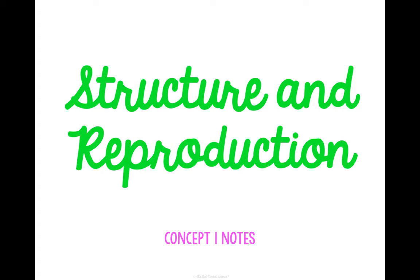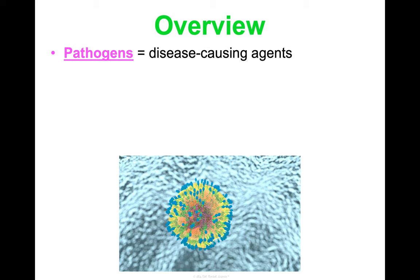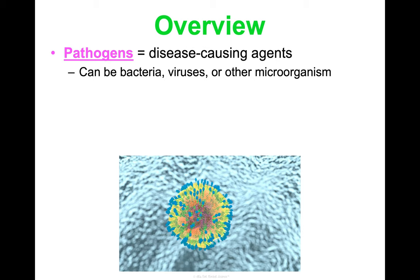This is Concept One Notes in our Pathogens Unit, and we're going to be talking about the structure and reproduction of both bacteria and viruses. Before we jump in, this unit is titled Pathogens. So what are pathogens? They are disease-causing agents. This can be bacteria, it can be viruses, but it can also be other microorganisms.